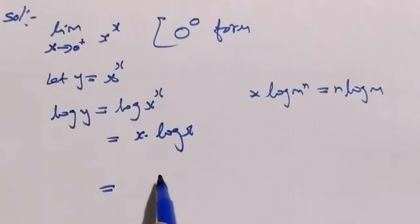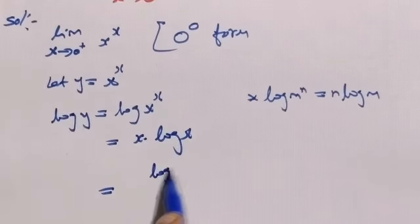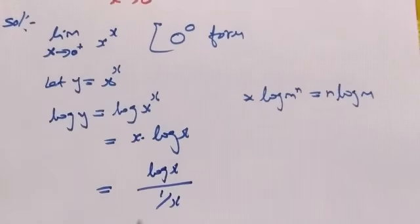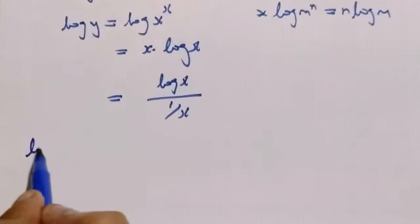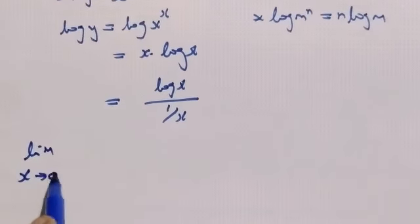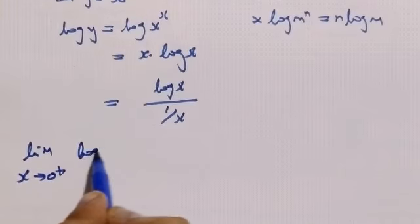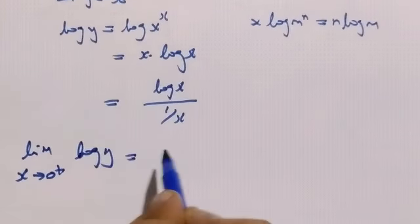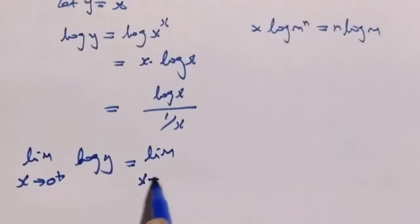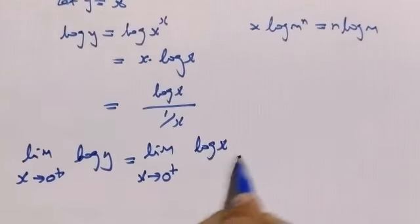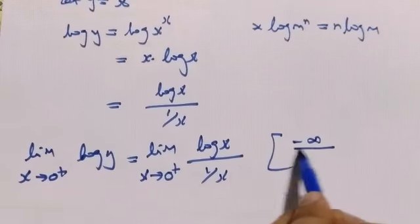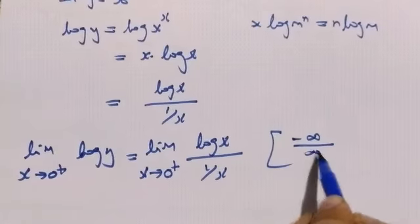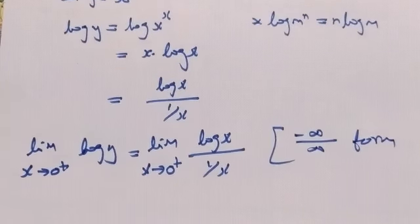So we apply L'Hôpital's rule. Now log x divided by 1 over x. So limit as x approaches 0 plus, log y equals limit as x approaches 0 plus, log x divided by 1 over x. Now applying the limit: log 0 is minus infinity, 1 over 0 is minus infinity. So this is an indeterminate form.